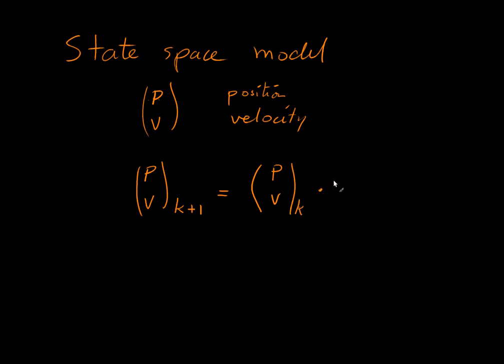We can multiply that with a matrix. And see how these things add up. The position should be multiplied with a 1. The velocity should be multiplied with a 1. We should have a 0 down here. And what should be up here is our change in time between the K and the K plus 1 observation.